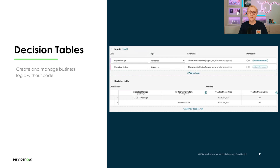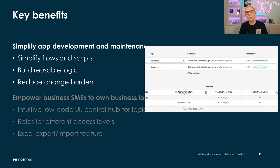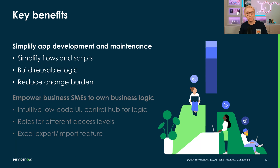Decision tables enable developers to decouple decision logic from their code to create and maintain decision rules in applications. With decisions, it is seamless to update your business rules anytime, as you can modify decision rules without changing the code. With decision tables, you simplify your flows and scripts by building reusable logic and you also reduce the change burden.